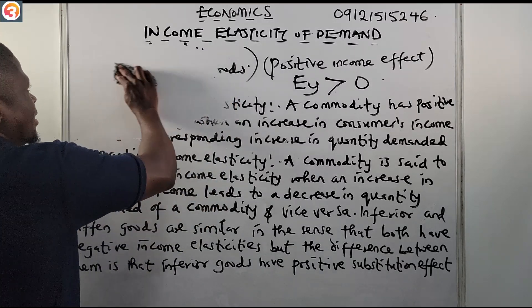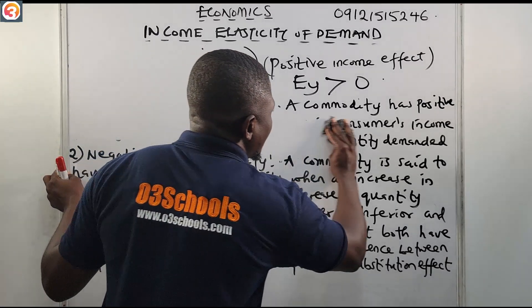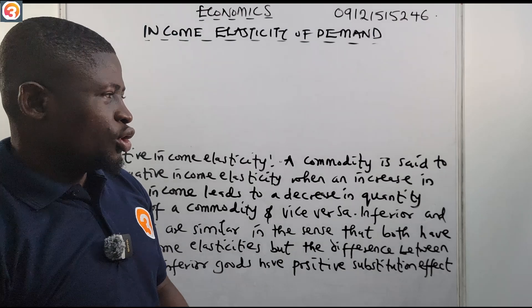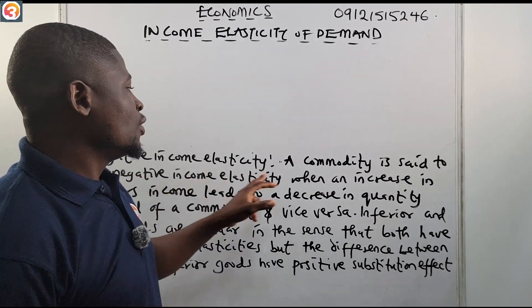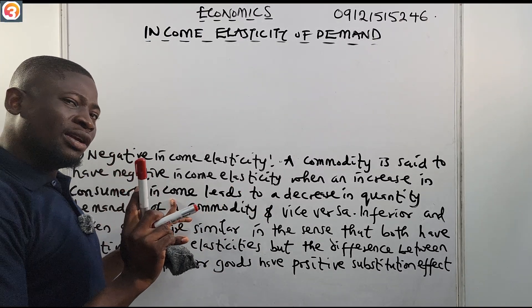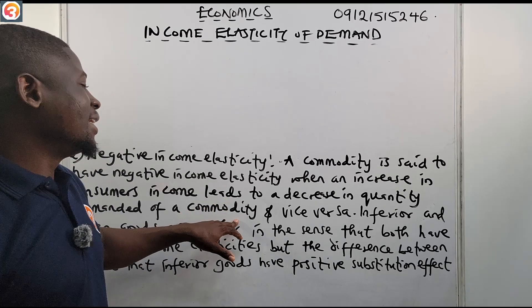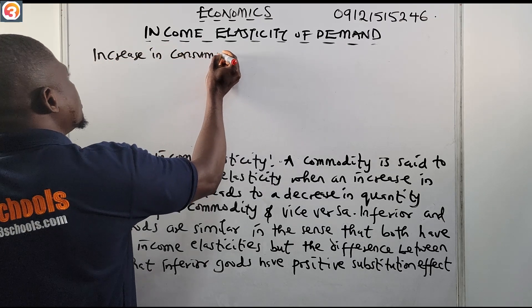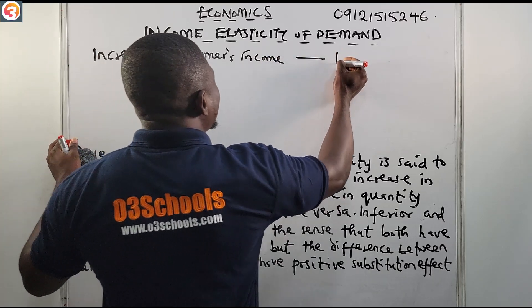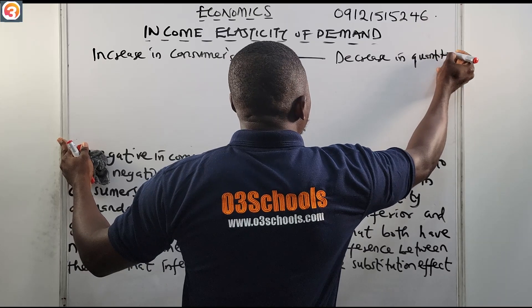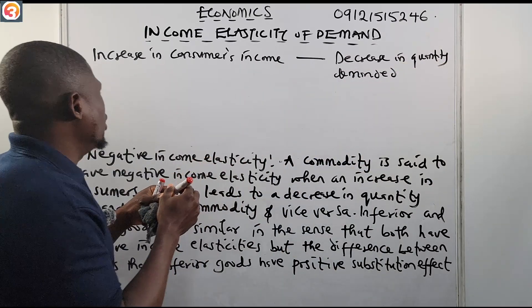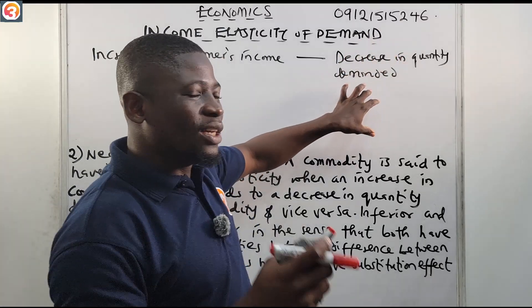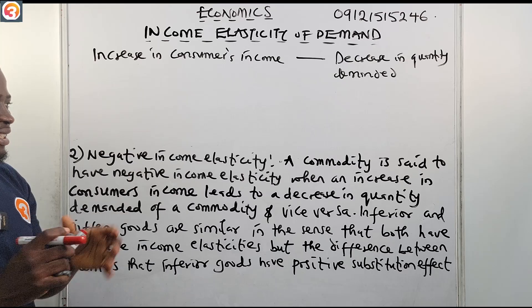Now for the second type — negative income elasticity. A commodity is said to have negative income elasticity when an increase in consumer's income leads to a decrease in the quantity demanded of that commodity, and vice versa. As consumer income is increasing, the quantity demanded for those goods is decreasing.